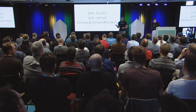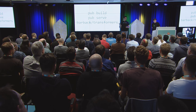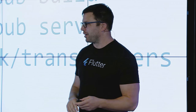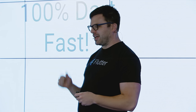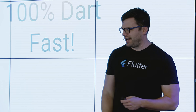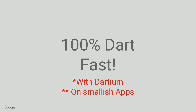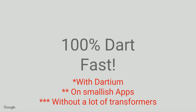We have solutions for this now, right? We say use pub, pub build, pub serve. Use barback transformers. I've talked to people who've written a bunch of their own transformers. This is a really great model. It's 100% Dart, so it ships in the box. And it's fast — well, if you're using Dartium, and if your app is on the smaller side, and if you don't have a lot of transformers. When Will and others talked about how things got kind of slow, that's what happened.